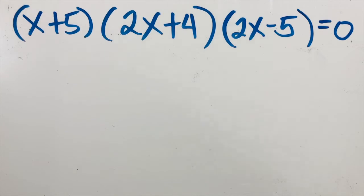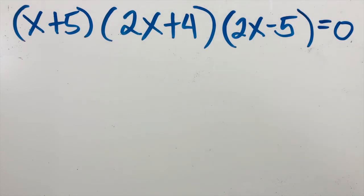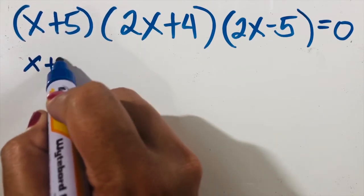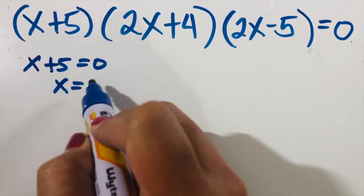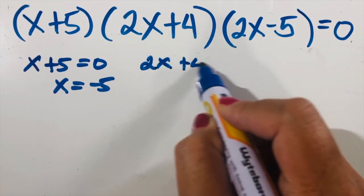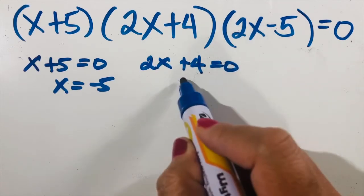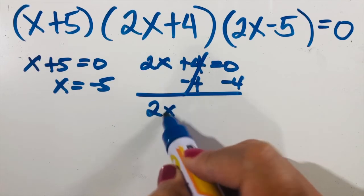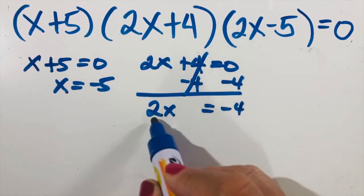For our last example: (x plus five) times (2x plus four) times (2x minus five) equals zero. The process is the same, but the difference is there are three factors. For the first factor, x plus five equals zero, so x equals negative five. For the second factor, 2x plus four equals zero: subtract four on both sides, giving 2x equals negative four.